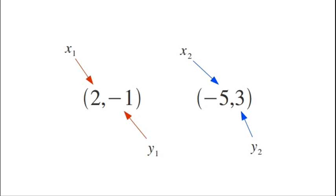When I go to the equation, when I see the x1, I'm going to plug in a 2. When I see the y1, I'm going to plug in a negative 1. And when I see the x2, I'm going to plug in a negative 5 and, of course, with a y2, I'm going to plug in 3.